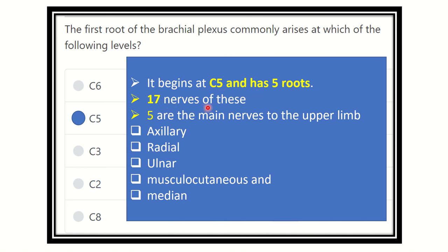From the brachial plexus, 17 nerves arise in total. Among them, 13 are from the cord: from the posterior cord it is 5, from the medial cord it is 3, and from the lateral cord it is 3 branches. From the root it is 2 branches, and from the trunk it is 3 branches — total 17 branches.